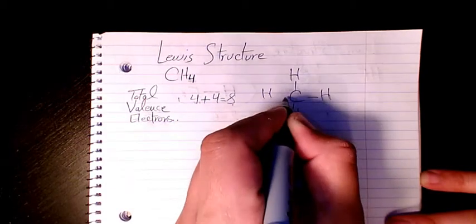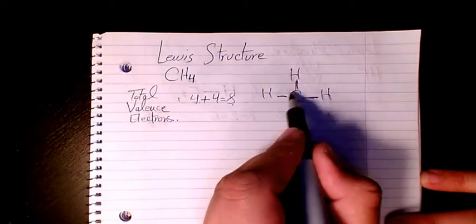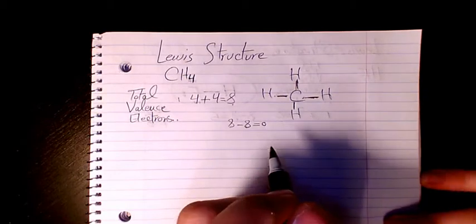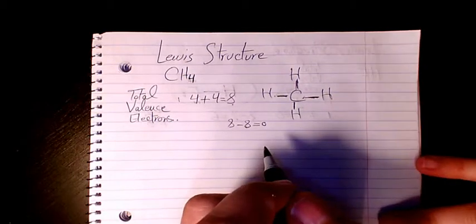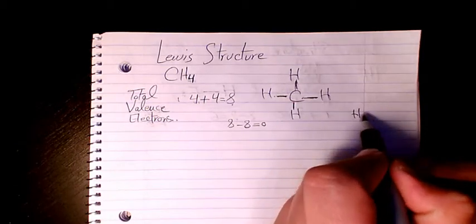One bond, one, one, one, and one bond. So we have two, four, six, and eight. So eight minus eight is zero, so there is no more remaining electron. And let's check the octet rule for hydrogen. Everything is two.